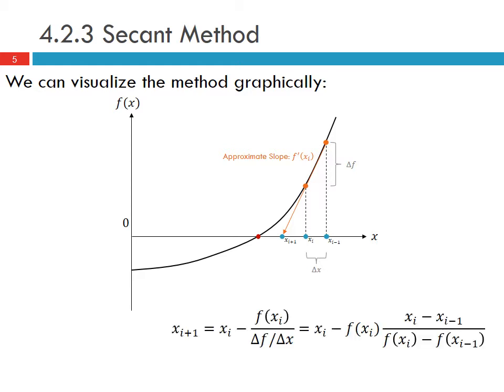Again here, we're basically plugging in our approximate derivative in the Newton-Raphson formula, which gives us our secant formula. This is the approximate derivative here.